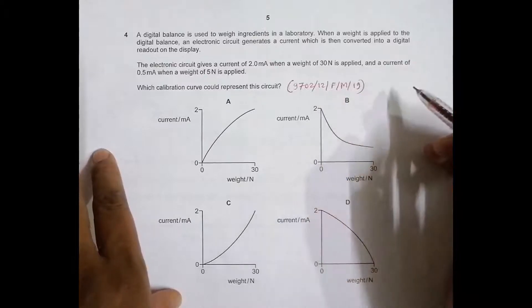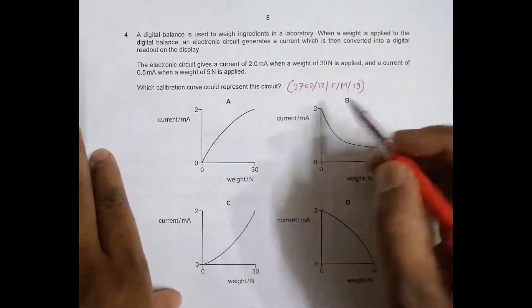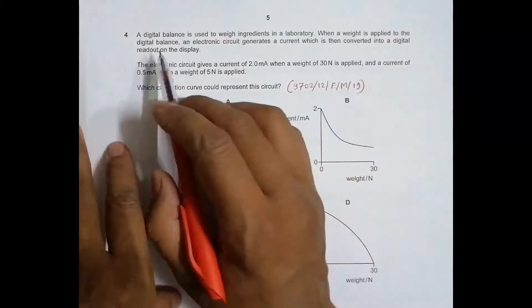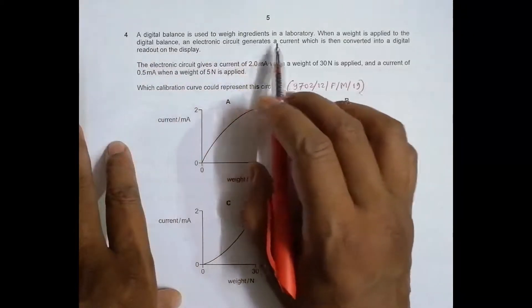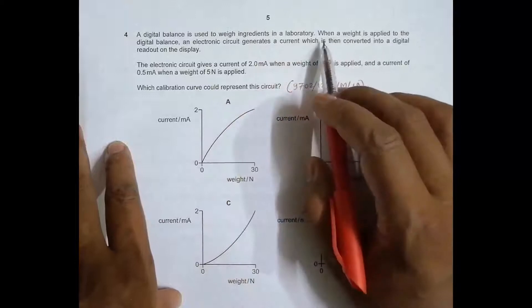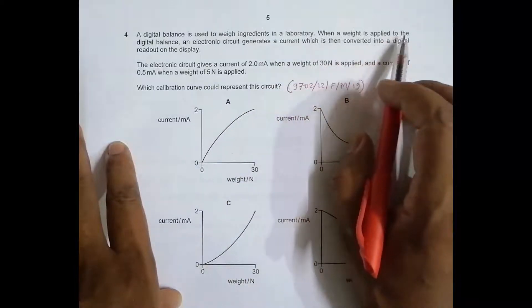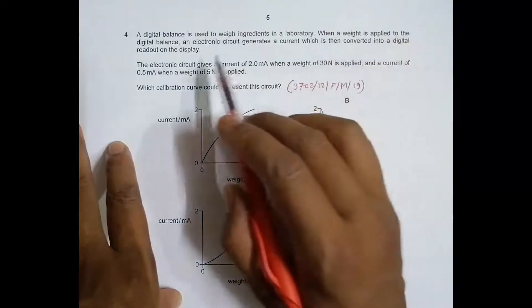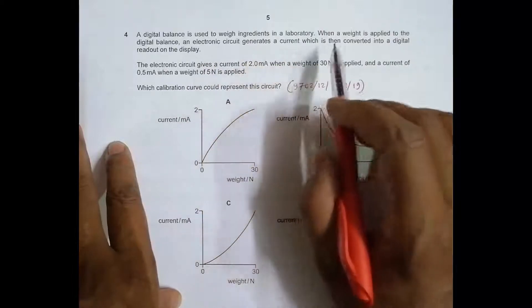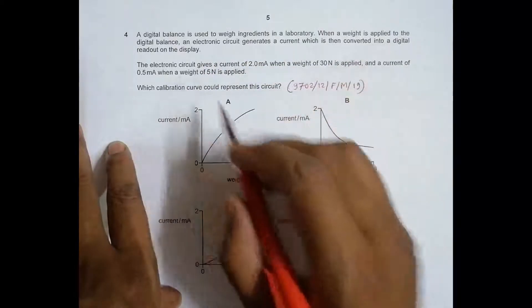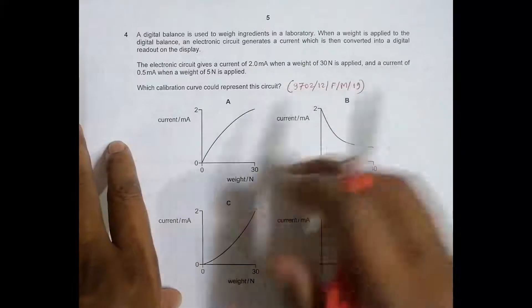It is concerned with the measurement techniques chapter. It says that a digital balance is used to weigh ingredients in a laboratory. When a weight is applied to the digital balance, the electronic circuit generates a current which is then converted into a digital readout on the display.